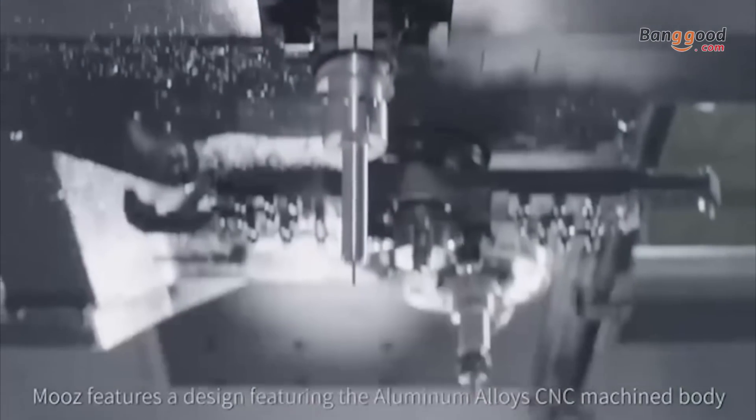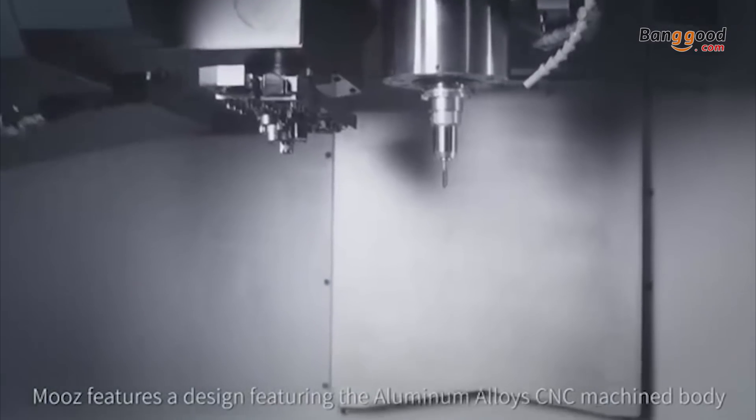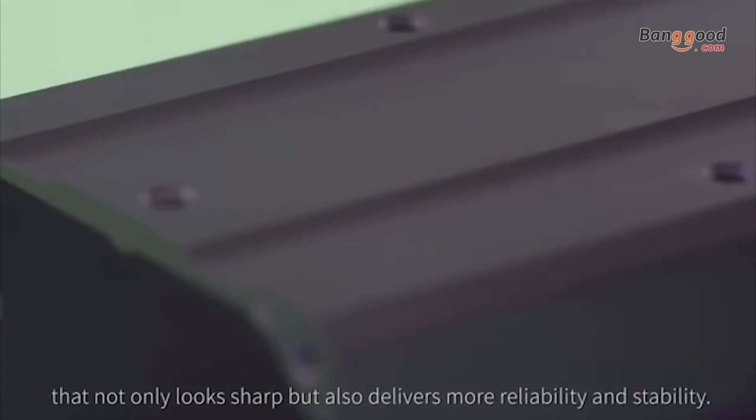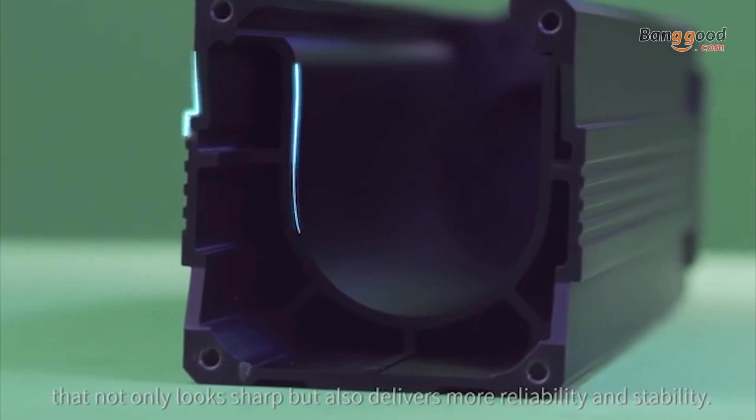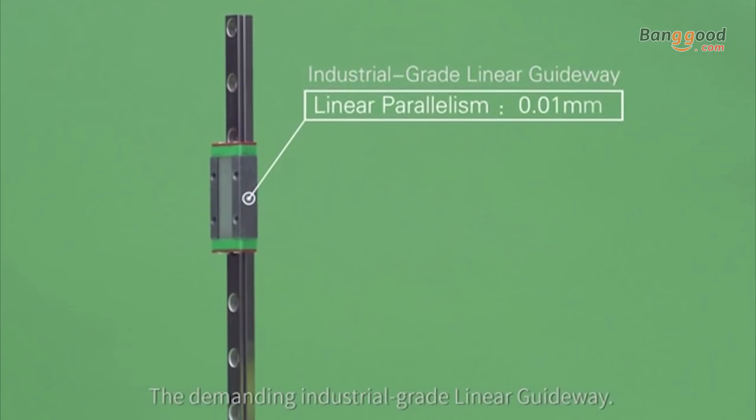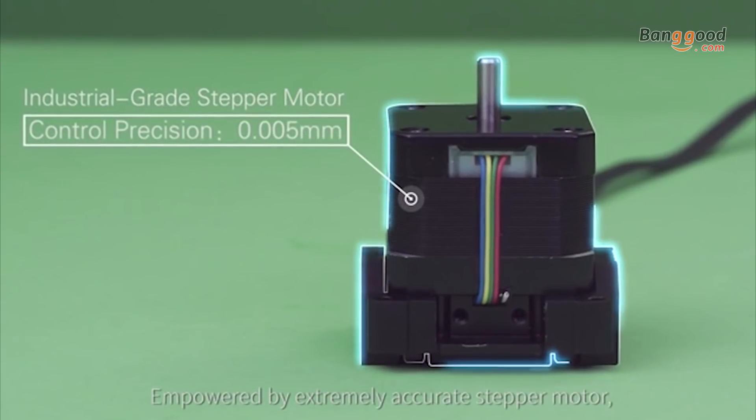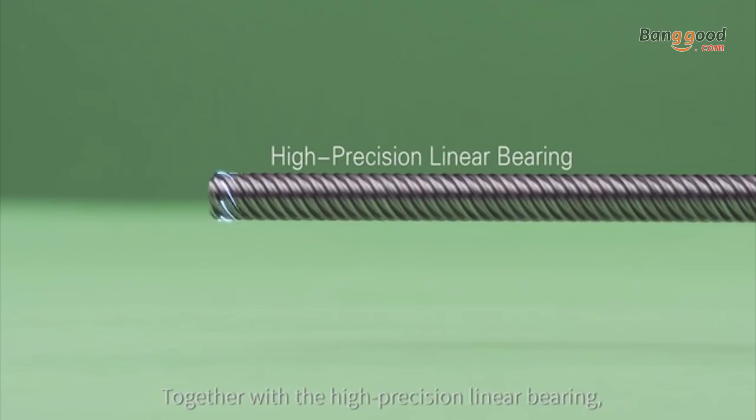Moose features an aluminum alloy CNC machined body that not only looks sharp but also delivers more reliability and stability. The demanding industrial grade linear guideway, empowered by extremely accurate stepper motor together with the high precision linear bearing, making every movement of the printer more precise.